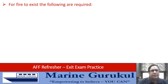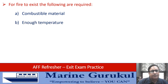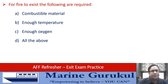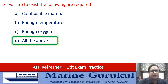For fire to exist the following are required: combustible material, enough temperature, enough oxygen — all of the above. We have all heard of the fire triangle, so all of the above are the arms of the fire triangle. The answer is D — all of the above.